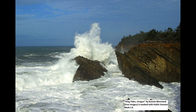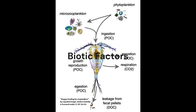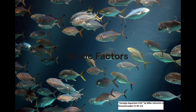Biotic factors in an ecosystem refer to living organisms and their interactions with each other. In the marine biome, examples include phytoplankton, zooplankton, and fish. Phytoplankton are microscopic algae that form the base of the marine food web through photosynthesis. Zooplankton are small animals such as krill and copepods that feed on phytoplankton and serve as a food source for many marine organisms. Fish are a diverse group of aquatic vertebrates that occupy various niches in the marine ecosystem, ranging from small reef fish to large pelagic fish.